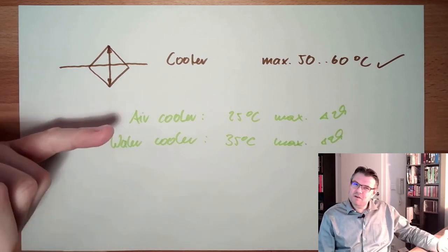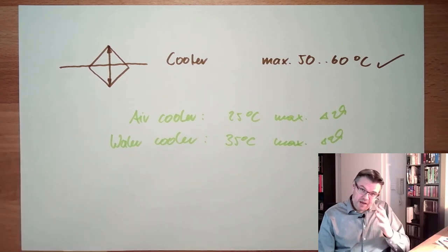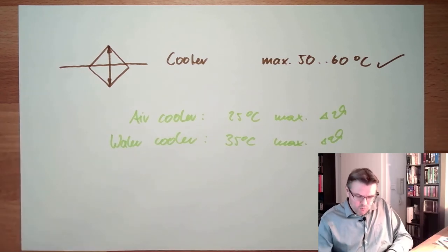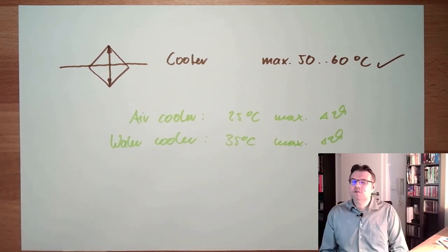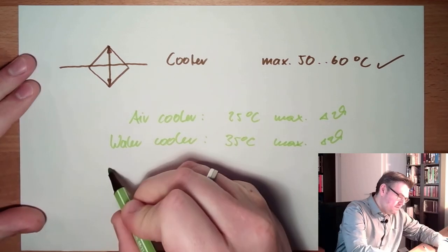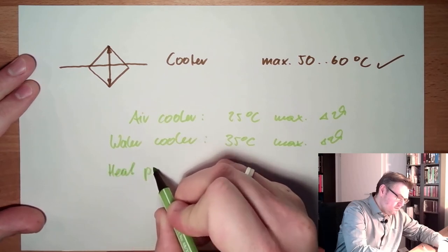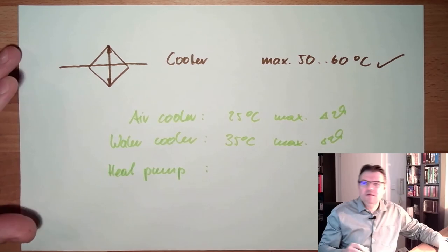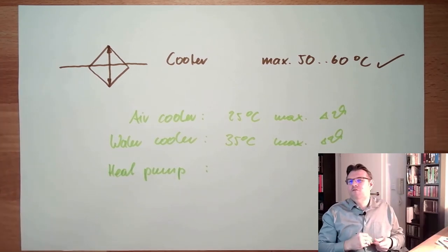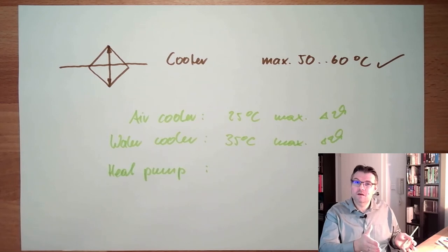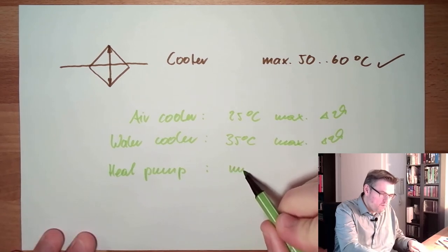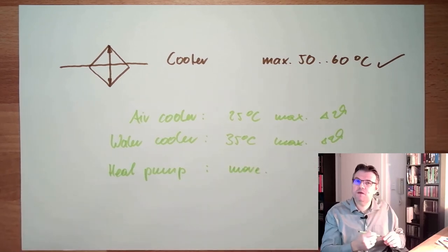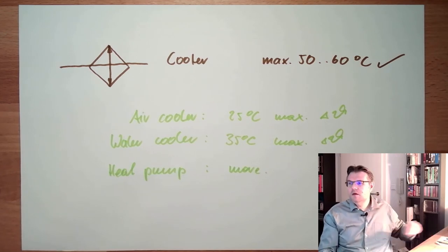And if this is simply not enough, if there is so much energy involved, then we need a special cooling equipment, a heat pump inside. So heat pump. Which is essentially a refrigerator, a fridge for the oil. We need the heat pump. This is more, if we need more, but it's getting expensive. Heat pump.